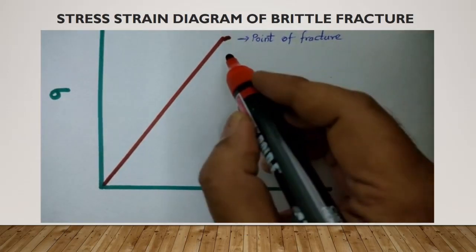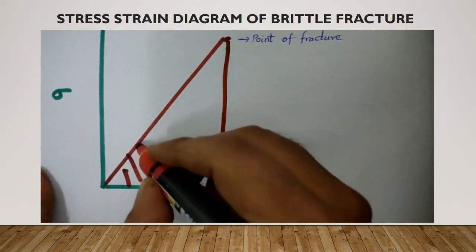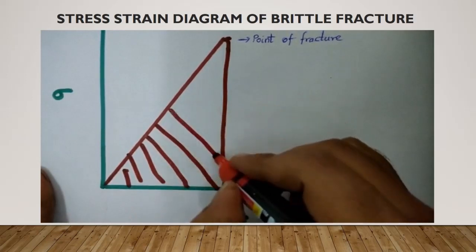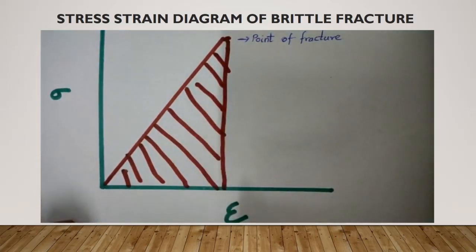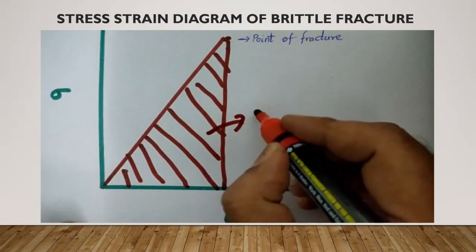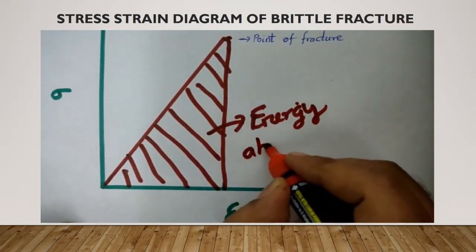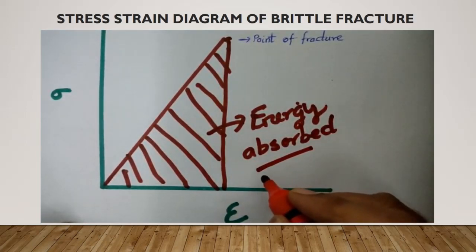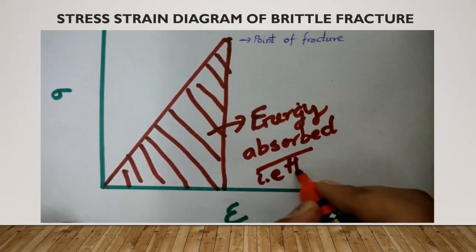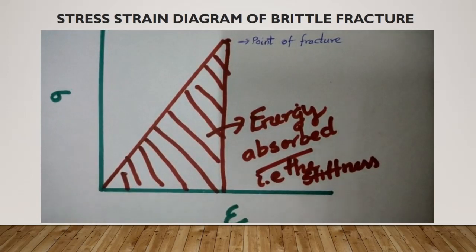In the stress-strain diagram of a brittle fracture, the stress versus strain is linear and constant, governed by Young's modulus of the material. The area under that stress-strain curve represents the energy absorbed in a brittle fracture. This is also referred to as the stiffness of the material — this is brittle behavior.